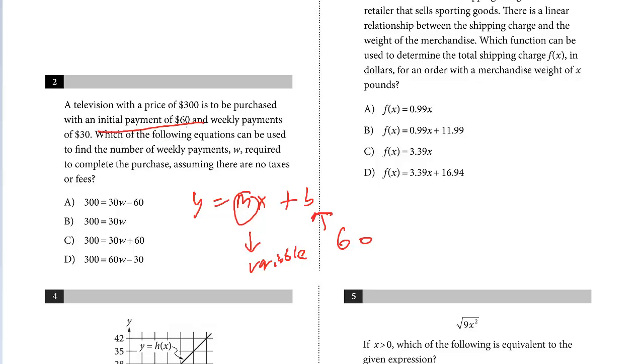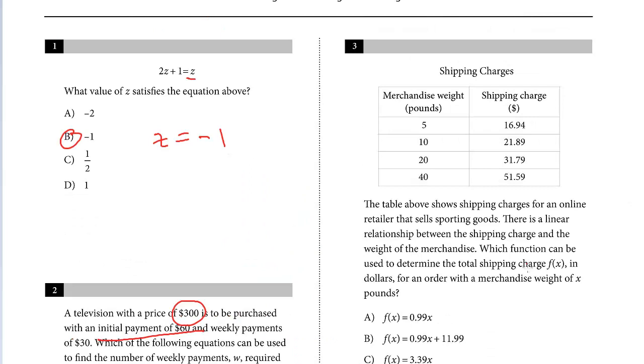Weekly payments are $30, and w is the number of weeks, so the slope is 30. The equation is 30w, which is $30 times the number of weeks, plus the initial amount of 60, equals 300. That is the answer.